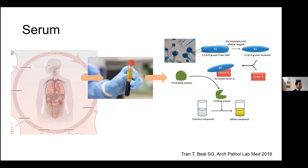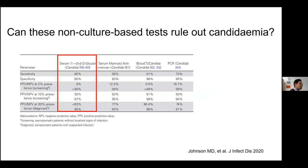Horseshoe crab blood is also used in the beta-glucan assay. Beta-glucan is part of the fungal cell wall — certainly part of the Candida cell wall — and it's released as a soluble form during cell growth, mainly as triple helices. The first step in the beta-glucan assay is to pretreat these triple helices with an alkaline reagent and convert them to monomers. The subsequent steps rely on the clotting cascade in the horseshoe crab's blood: beta-glucan binds to factor G and activates it, activated factor G activates the clotting enzyme, which then converts a colorless compound to yellow, measured by spectrophotometer — giving an indirect measure of beta-glucan levels in the blood.